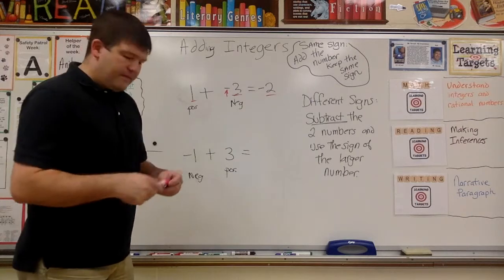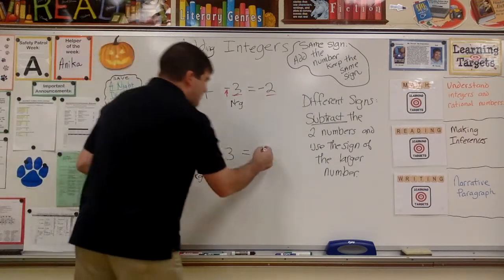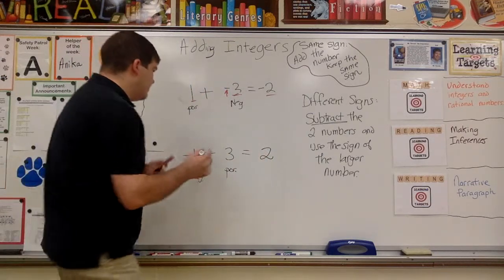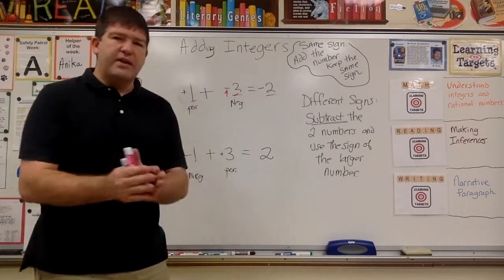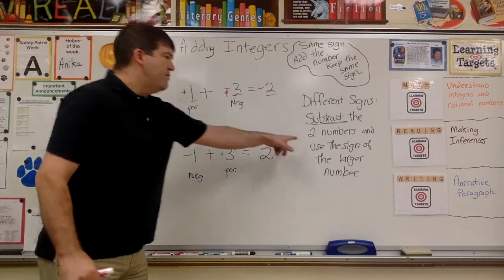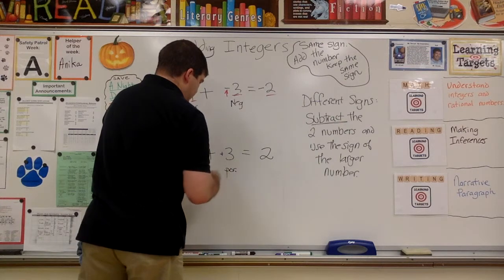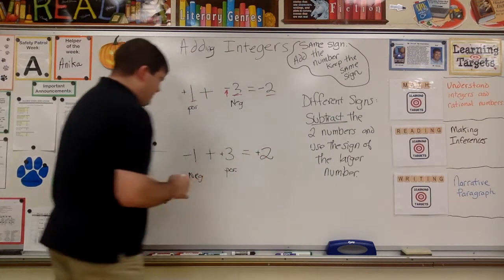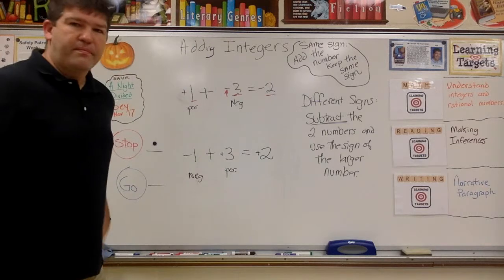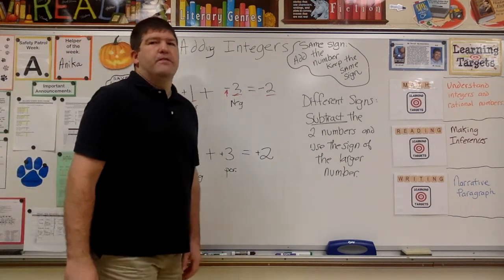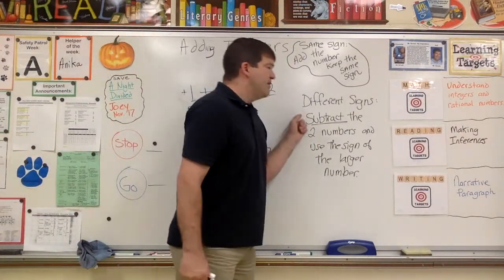Now for negative one plus positive three: different signs, so I subtract three and one and get two. I use the sign of the larger digit — three is larger — so I use the positive sign. Negative one plus three equals positive two. Again, you can verify this on the number line or just apply the method.